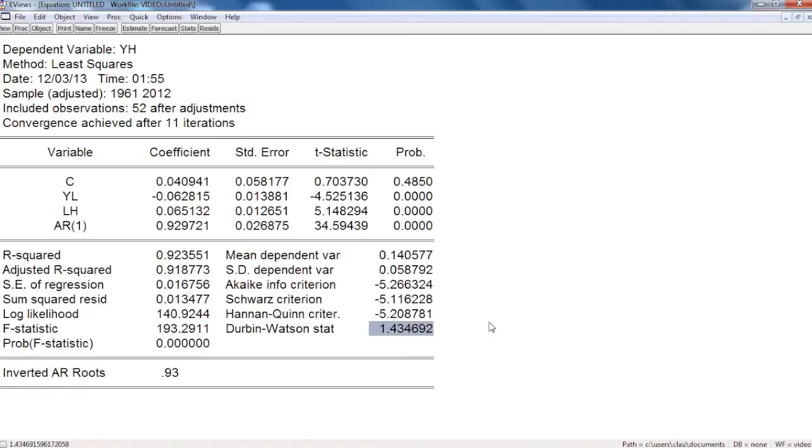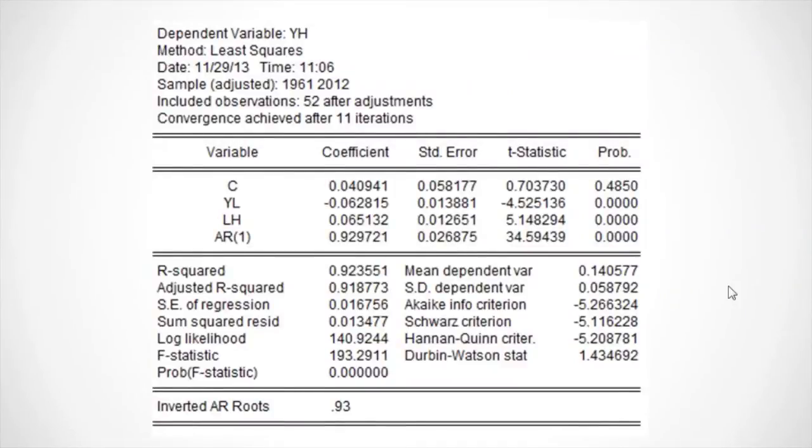And we have the Durbin-Watson statistic of 1.43, which is really close to 2, and that means that the serial correlation problem has almost disappeared.